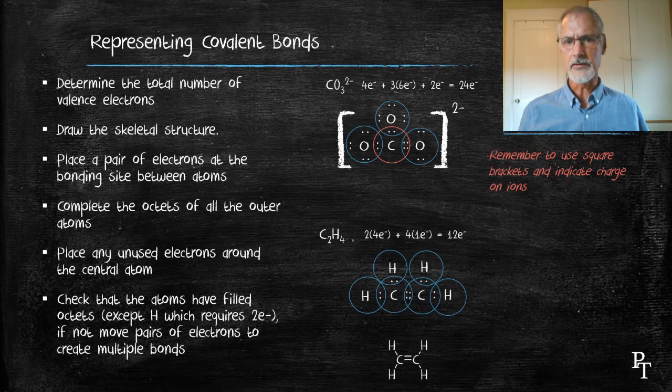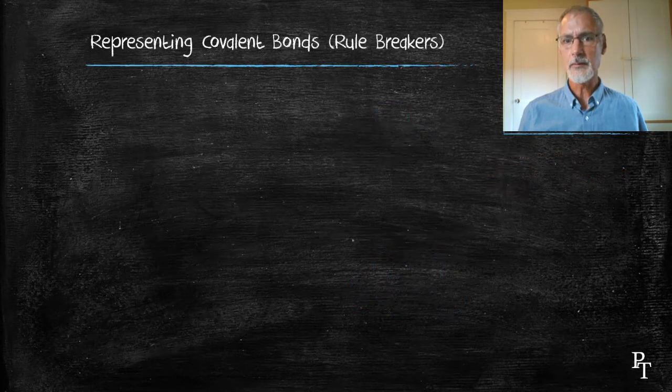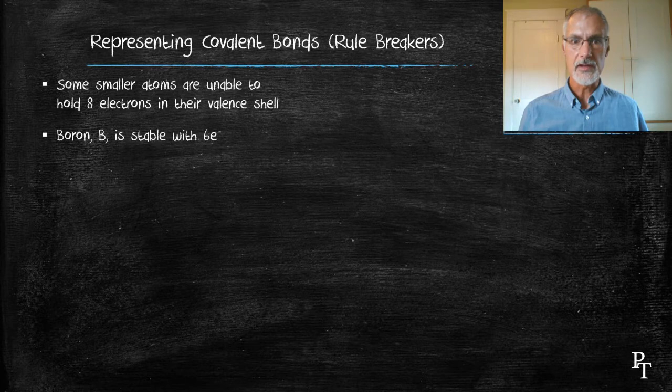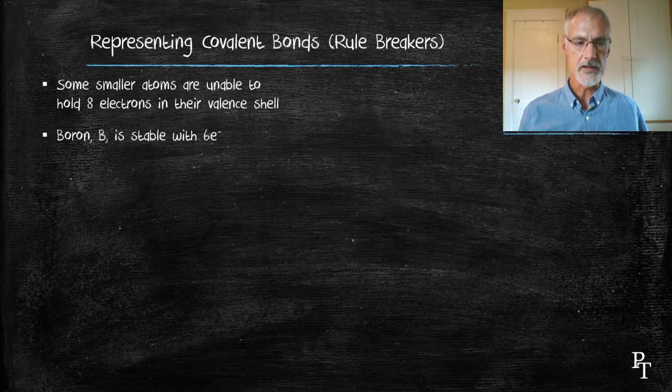There are a few that break the rule, and in particular very, very small atoms that are unable to hold eight electrons. Boron is an example in the periodic table, with only four protons. Five protons.